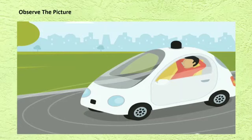In our day-to-day life, we see many objects like vehicles on the road, houses and trees. Some of them are moving while some do not. The objects that change their position are known as moving objects, while the objects which do not change their position are known as non-moving objects. A car changes its position, hence it is an example of a moving object, while a building and tree do not change their position, hence these are examples of a non-moving or stationary object.